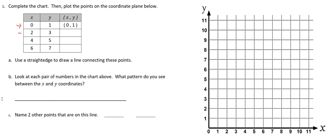So the second point would be the ordered pair (2, 3), then we have (4, 5), and (6, 7).